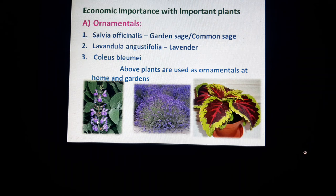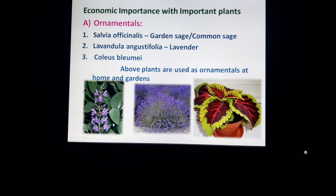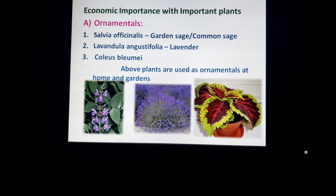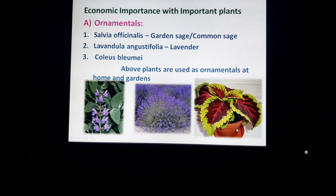See the following pictures. This is Salvia officinalis, commonly called garden sage. Next is Lavandula angustifolia, used for extracting oil. Next one is Coleus blumei — it is very attractive with beautiful variegated leaves. That is why it is also used as an ornamental plant in homes and gardens.